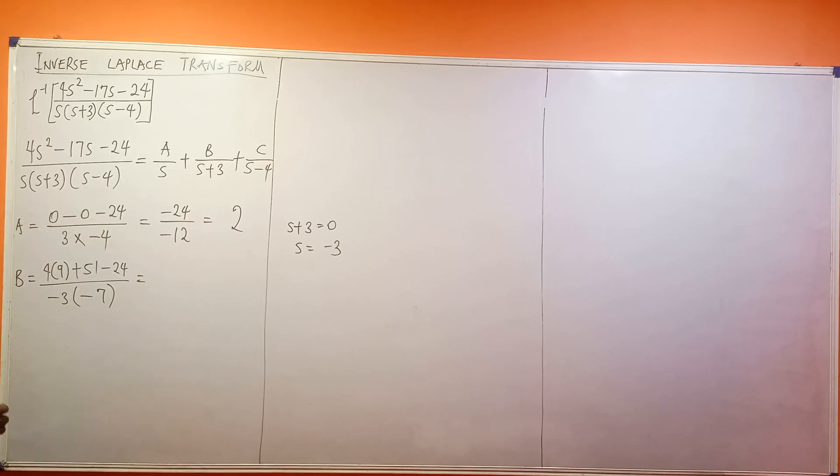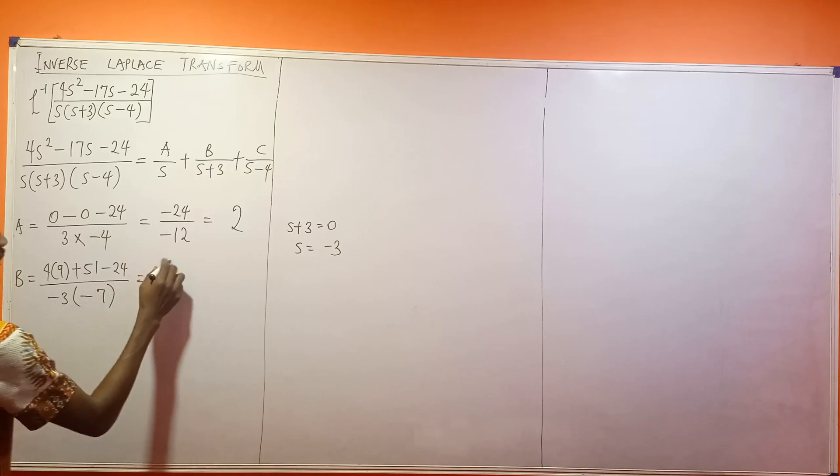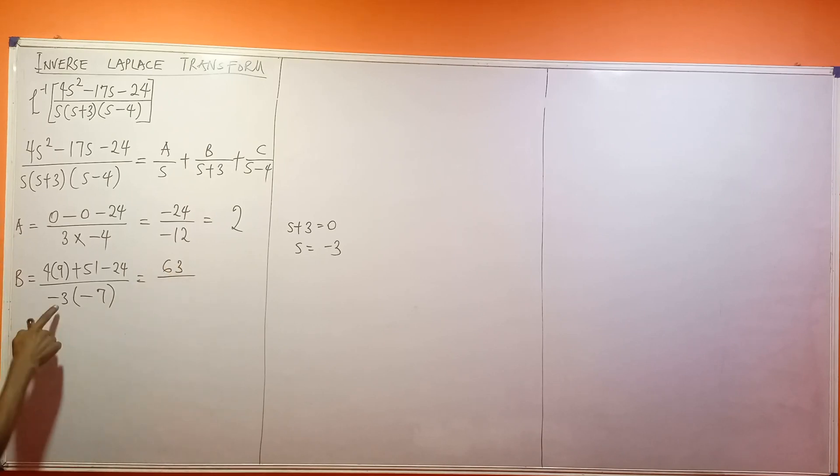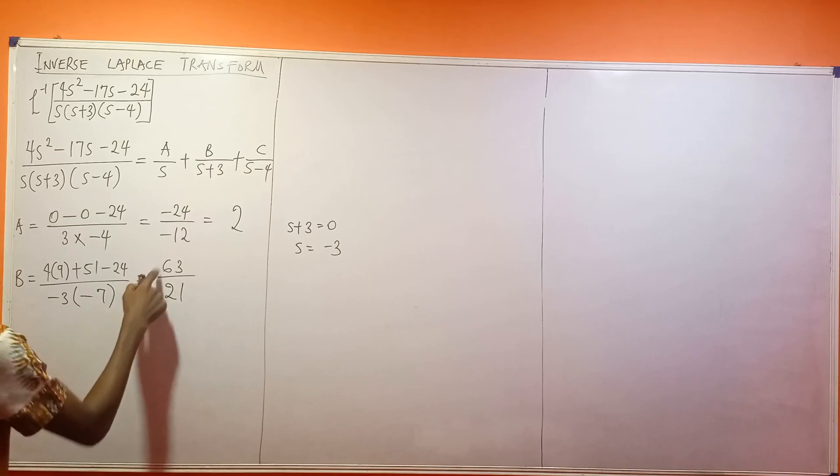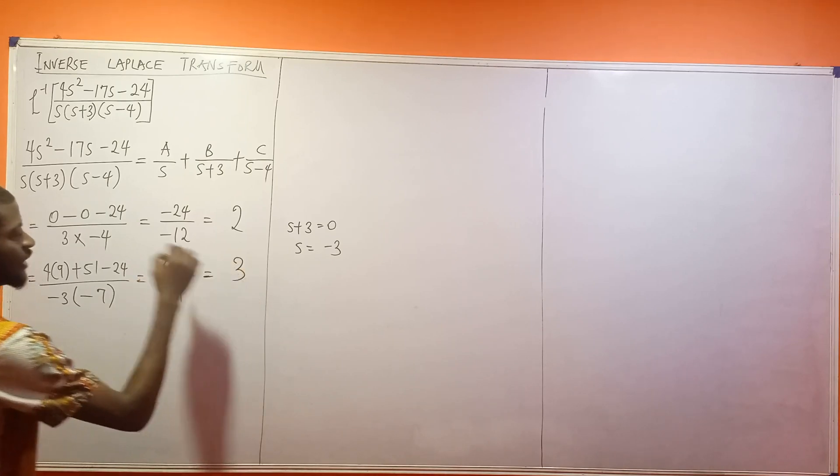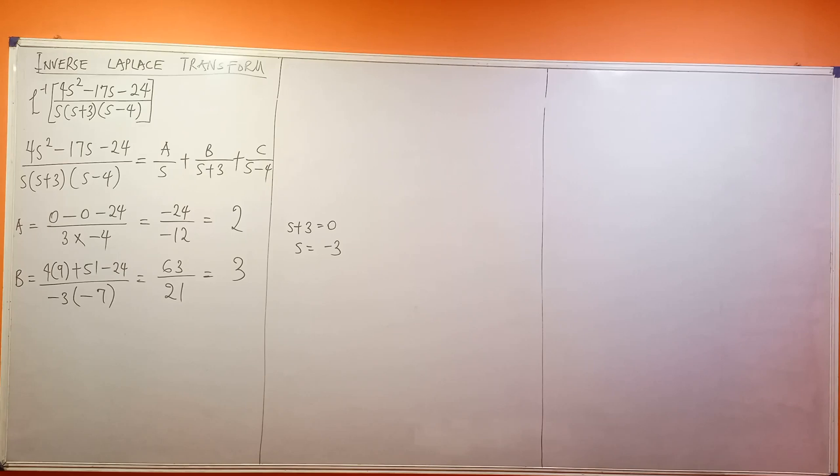So all this becomes at the end of the day, 4 times 9 is 36, then we have plus 51 minus 24. So this is going to give me 63 divided by 21, which is 3 at the end of the day. So that's my result.